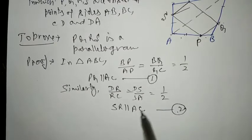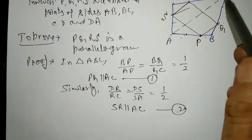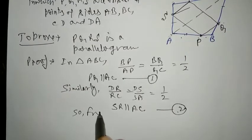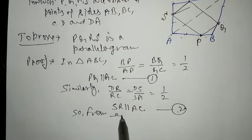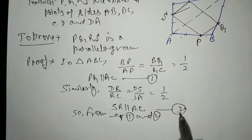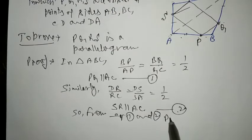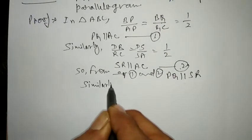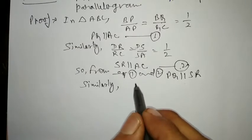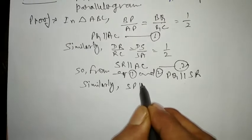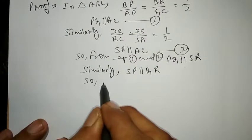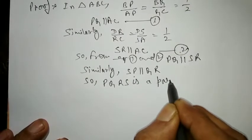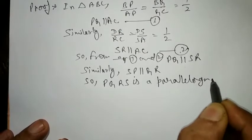From equations 1 and 2, the right-hand sides are both AC. Since PQ is parallel to AC and SR is parallel to AC, therefore PQ is parallel to SR. Similarly, we can prove SP is parallel to QR. So PQRS is a parallelogram. Proved.